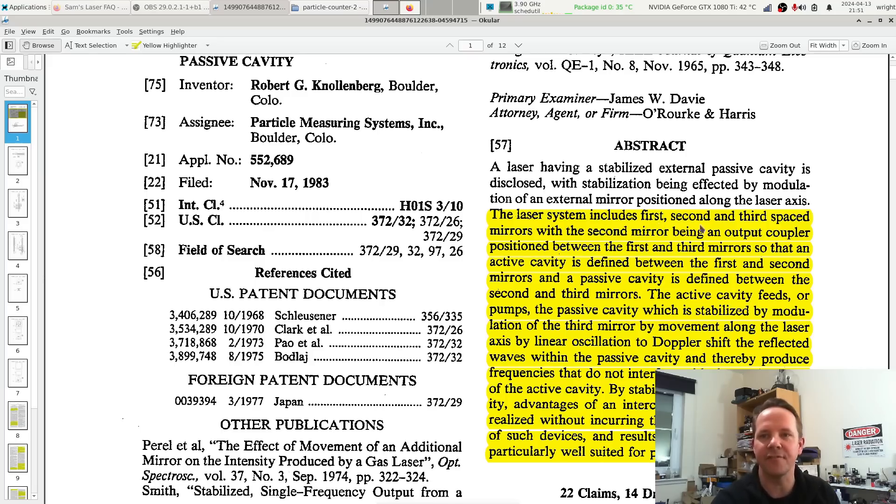I'll just take a look at the abstract and cover the main points. The laser system includes first, second, and third spaced mirrors with the second mirror being an output coupler. What this is really saying is we've got a helium neon laser, and then beyond the helium neon laser, we've got a third mirror that's reflecting light back on itself. The active cavity or laser feeds or pumps the passive cavity, which is stabilized by modulation of the third mirror by moving it backwards and forwards.